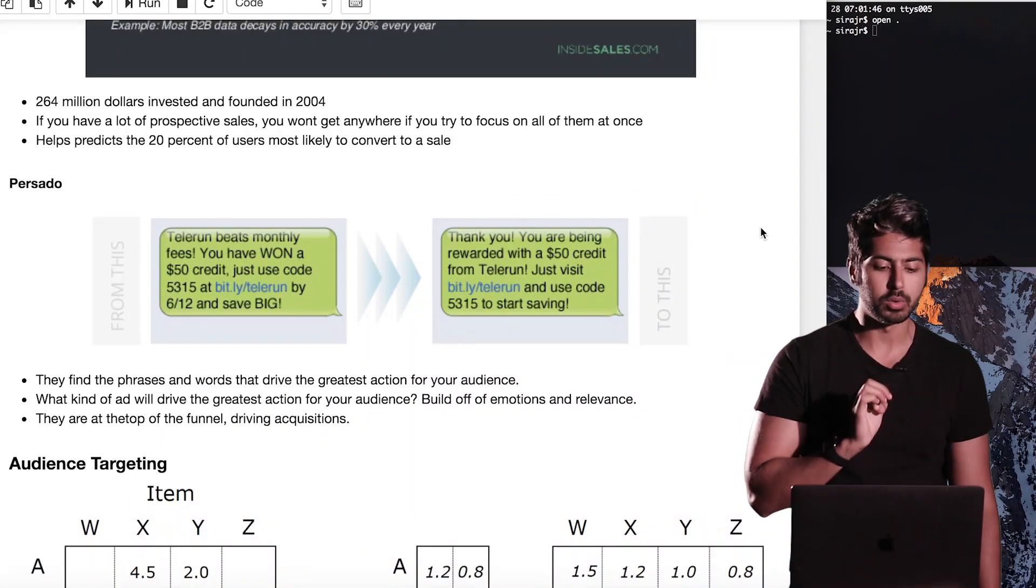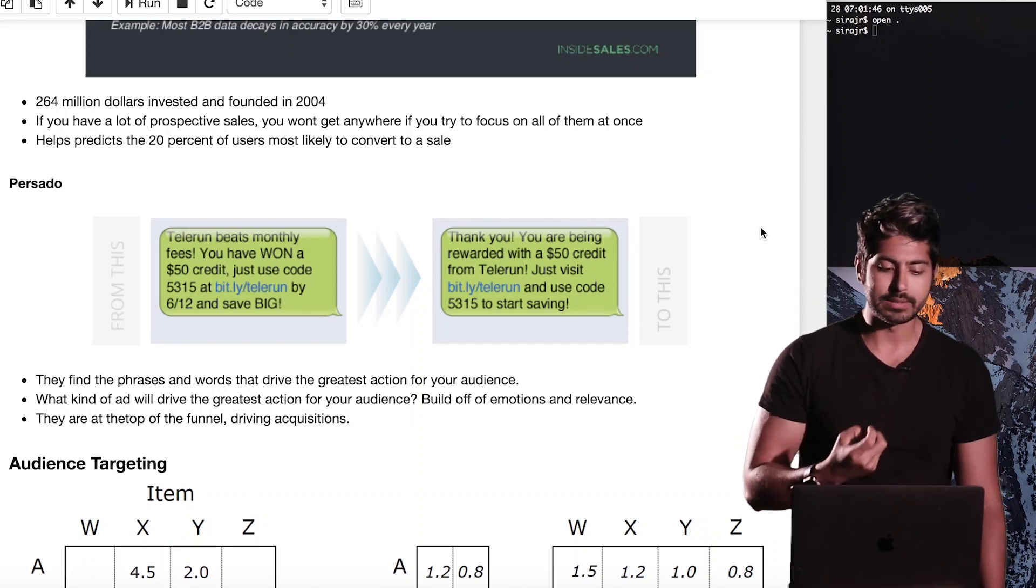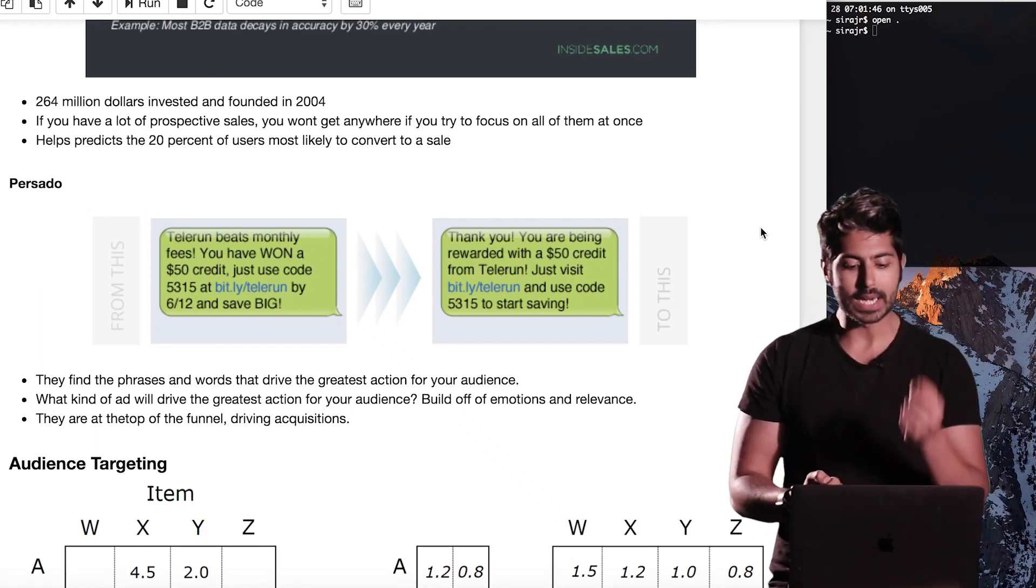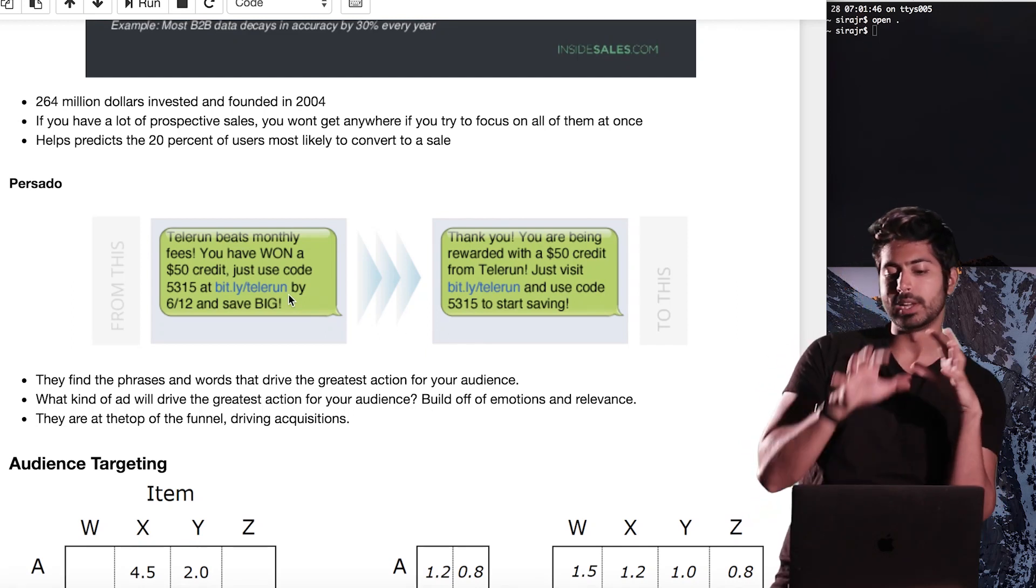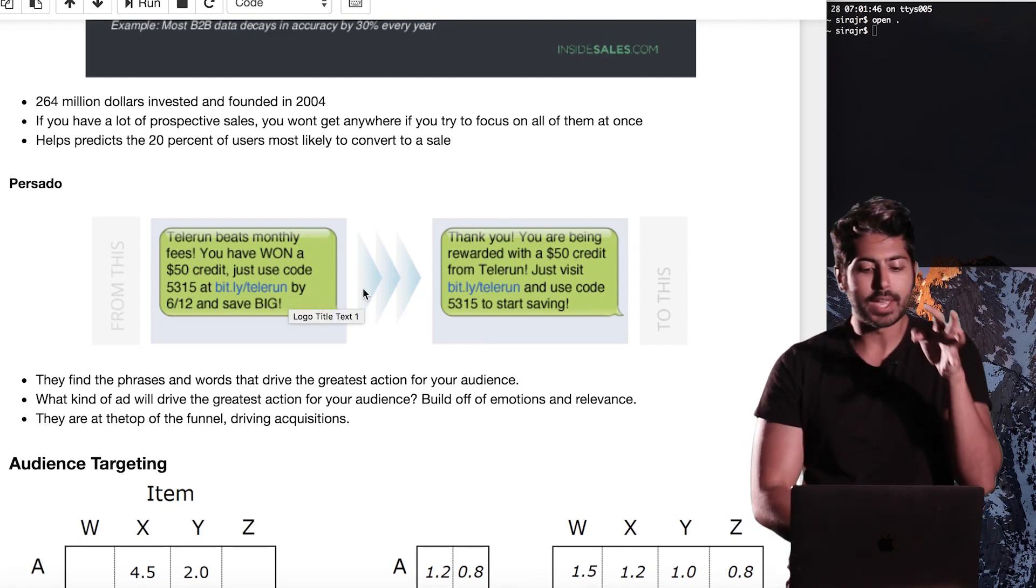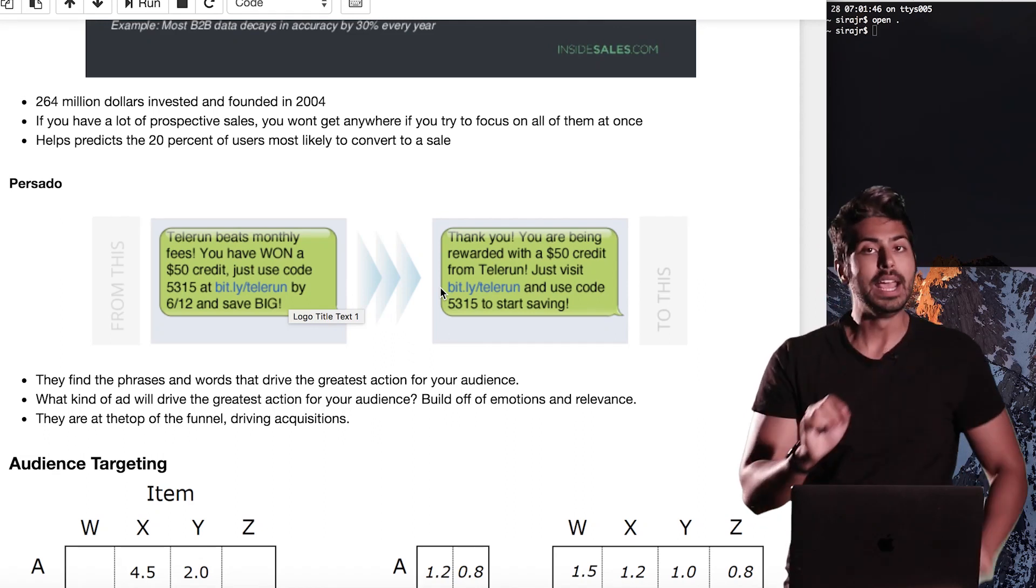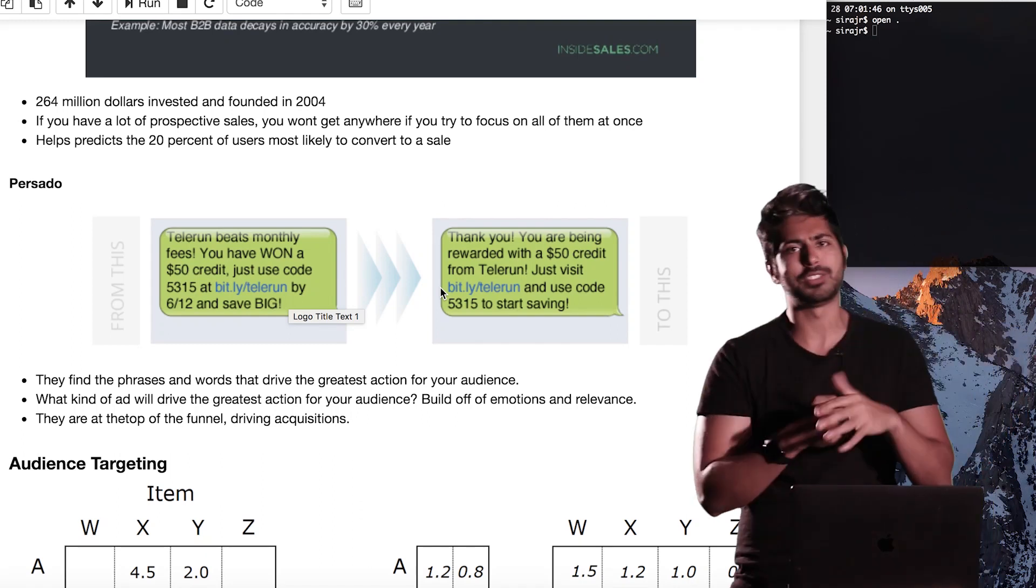And there's one more I want to talk about. It's called Persado. And what they do is they will help you create content. They will help you find the phrases and the words that are going to drive the greatest action for your audience to convert into sales. So you could say a text message in this way, but if you say it in this way, you reword it a little bit, it's going to increase sales by this much. And this is something that we humans try to do. We use our intuition.